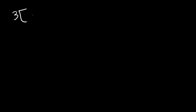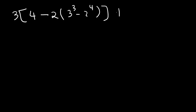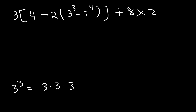Here's a harder example: 3 multiplied by 4 minus 2 times 3 to the 3rd power, minus 2 to the 4th power, plus 8 times 2. The first thing we need to do is work on the inside of the parentheses, starting deep within the brackets. We have some exponents. What is 3 to the 3rd power? When dealing with exponents, think of it as repeated multiplication — we're multiplying three 3's together. 3 times 3 is 9, and 9 times 3 is 27. So 3 to the 3rd is 27.